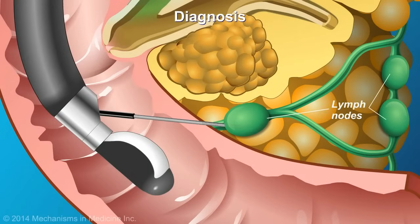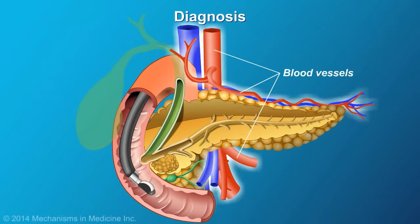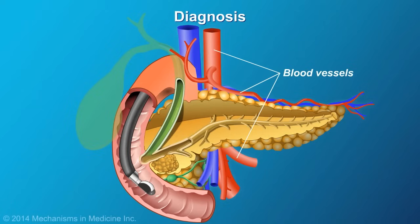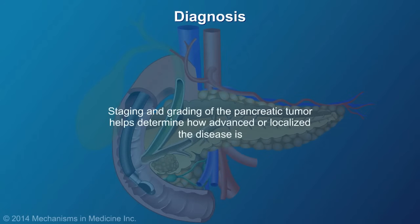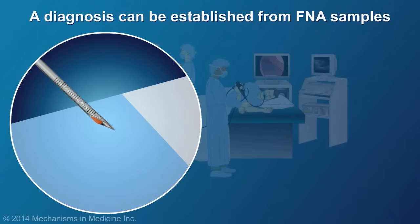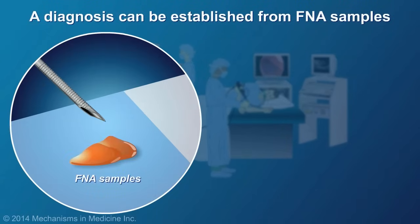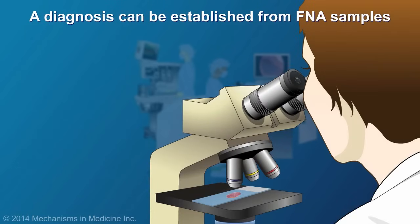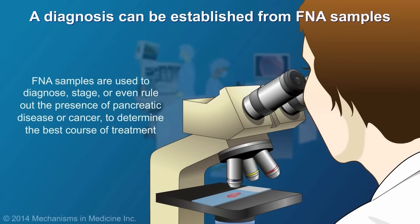On occasion, peripancreatic lymph nodes are also sampled to determine if the tumor has spread. The vessels around the pancreas are also closely studied to rule out any type of tumor involvement within the peripancreatic arteries and veins. This is called staging and grading of the pancreatic tumor, and this helps determine how advanced or localized the disease is. FNA samples are frequently read in the room where the procedure is being performed to ensure an adequate sample and, on occasion, to establish a preliminary diagnosis. These samples are used to diagnose, stage, or even rule out the presence of pancreatic disease or cancer to determine the best course of treatment.